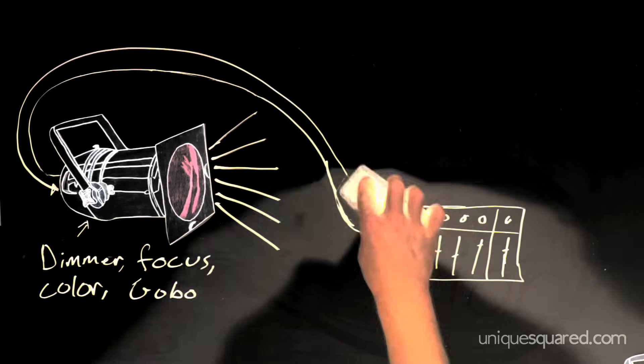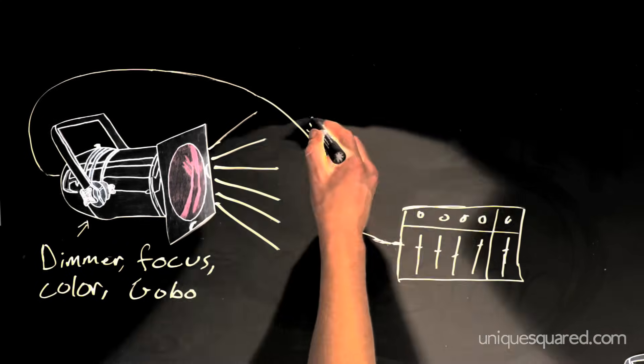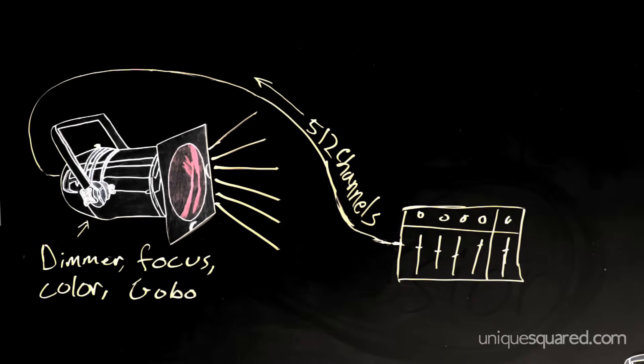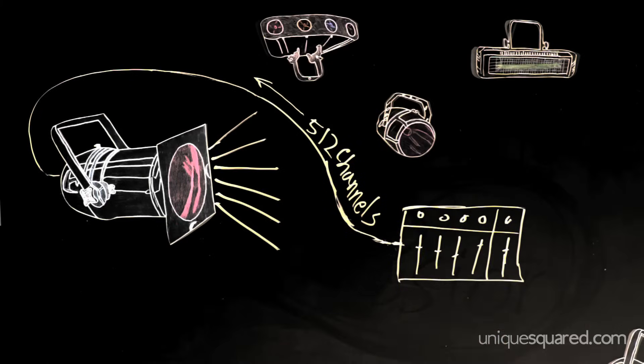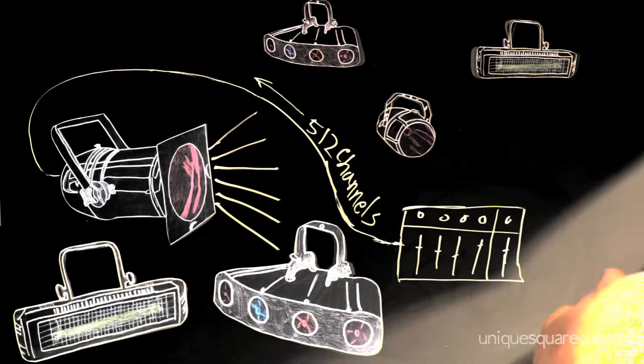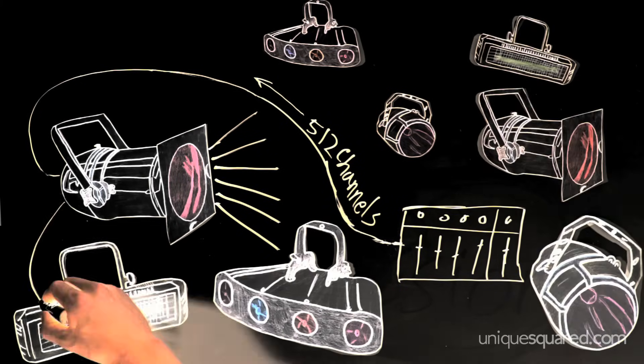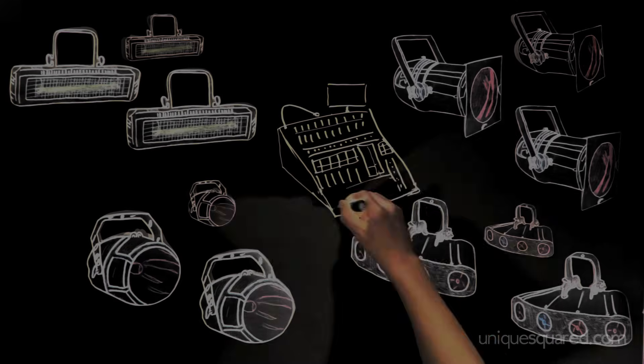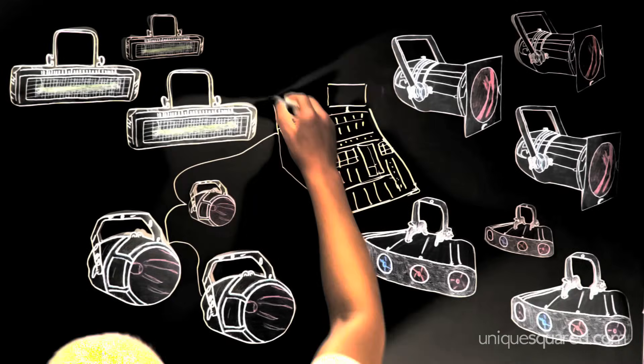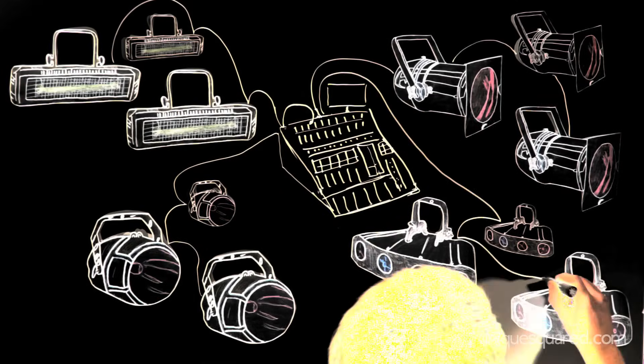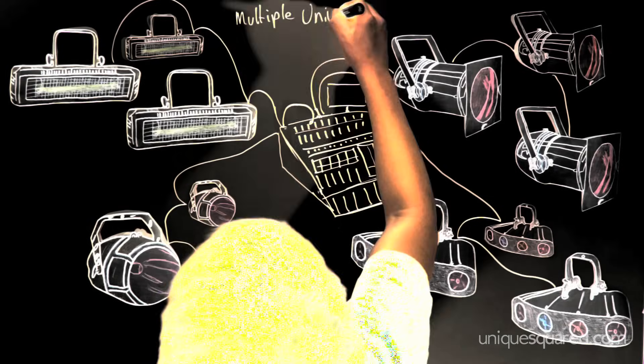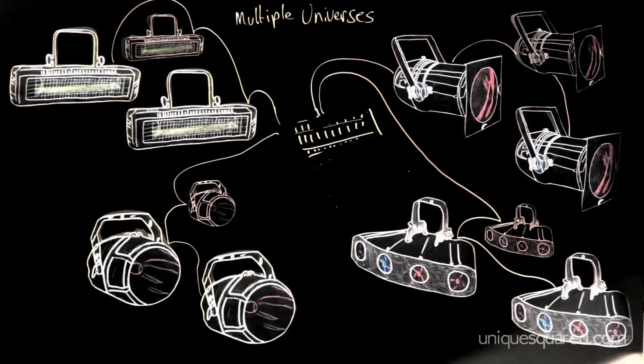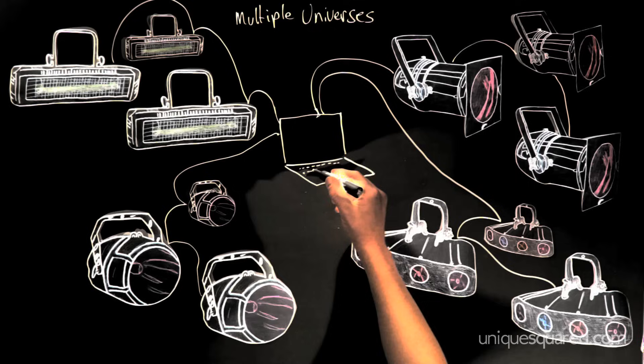One single DMX cable can carry packages to 512 addresses. We say that a single DMX cable has 512 channels of control. All 512 channels create a network called a DMX universe. Large control desks or operator consoles that you get at a concert have the ability to control multiple universes. There's DMX software that also has the ability to control multiple universes.